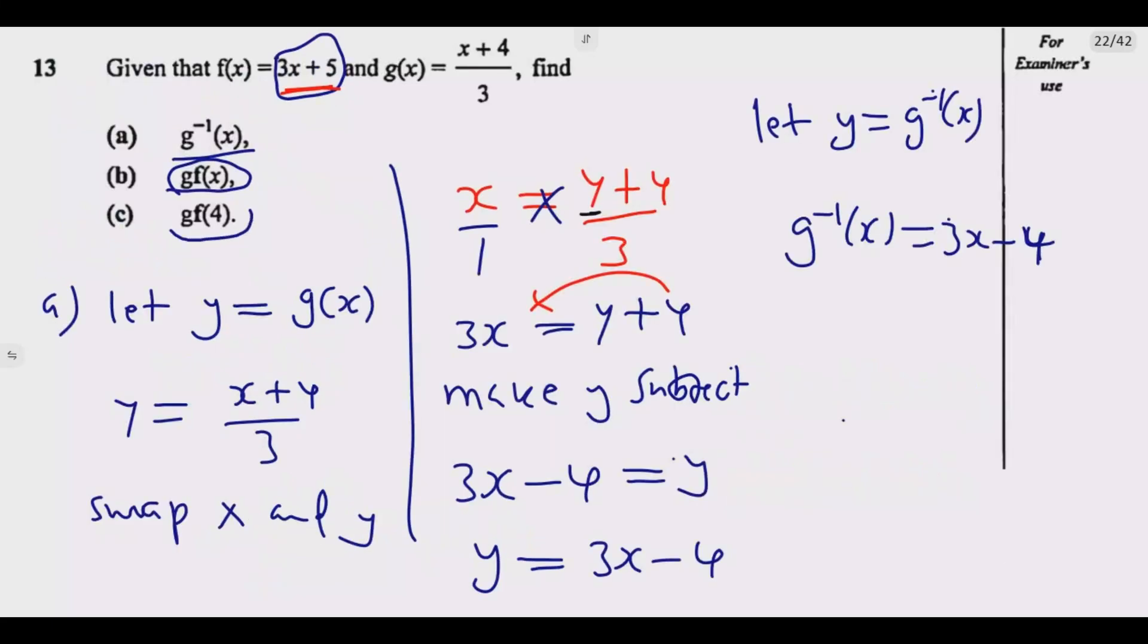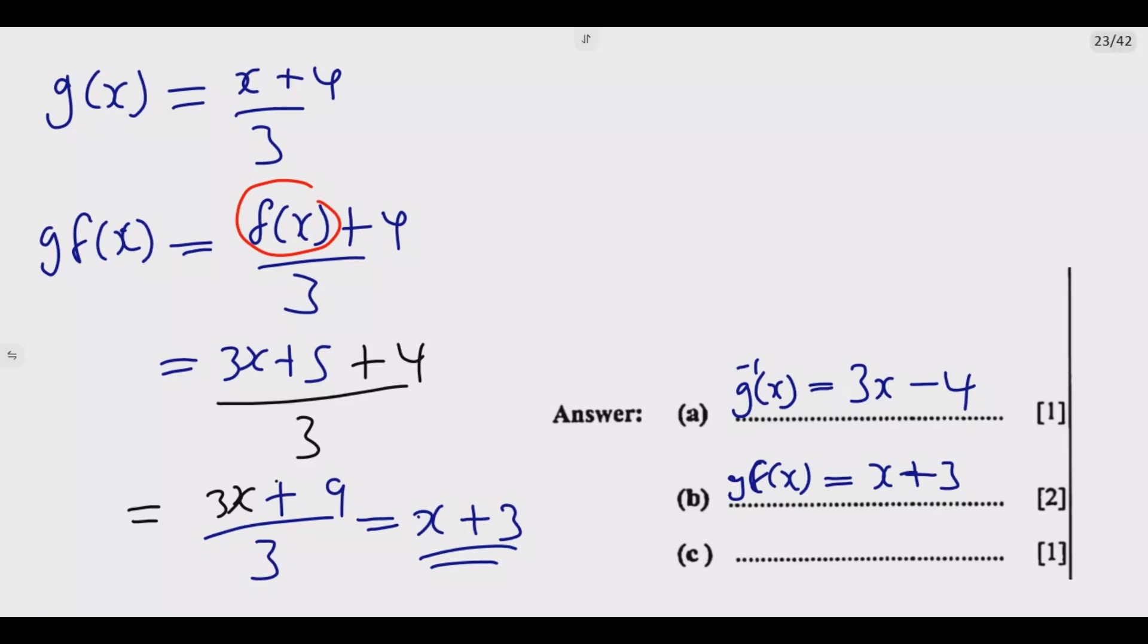Then we substitute, find g(f(4)). So meaning whatever there is x in this function, we put 4. So this is c, this is b. So whatever there is x in this function, we are going to put in a 4. So g(f(4)) means 4 plus 3, which is equal to 7. So 7 is the answer. So this is how you answer this question to get the 4 marks.